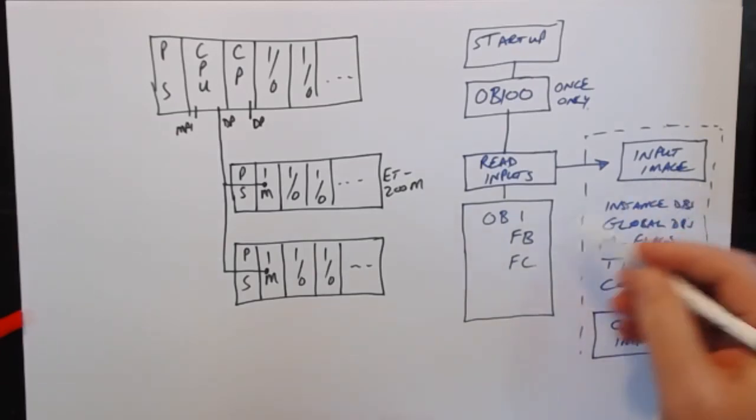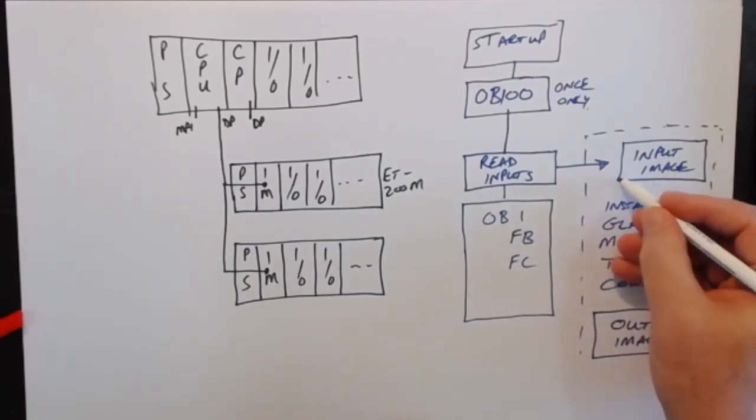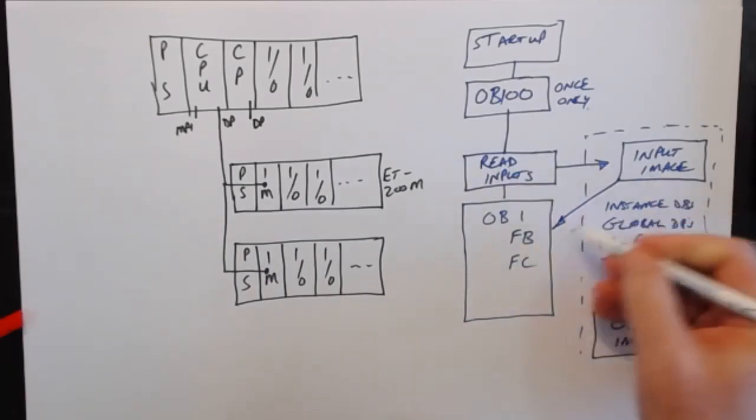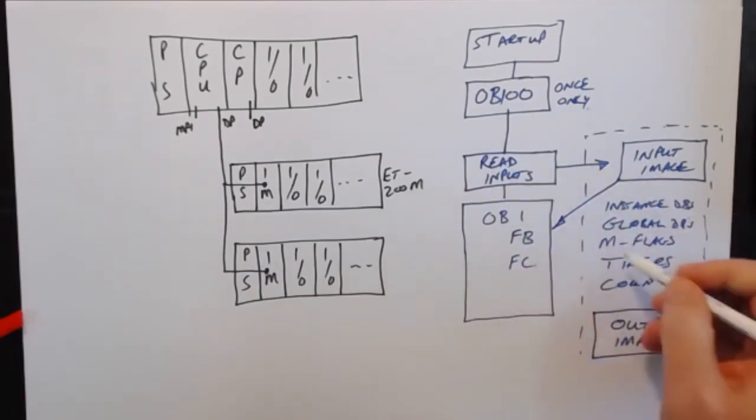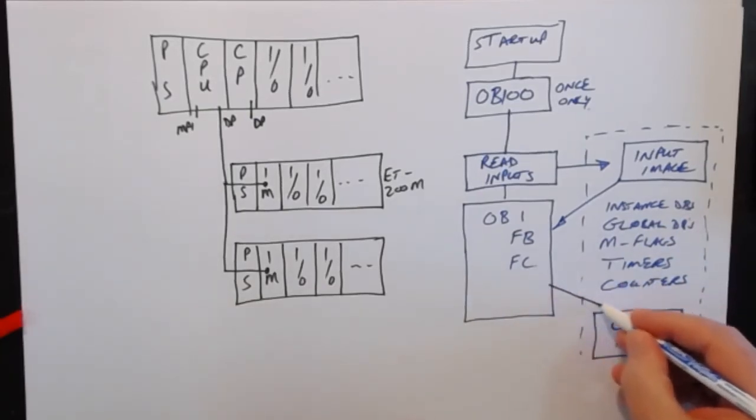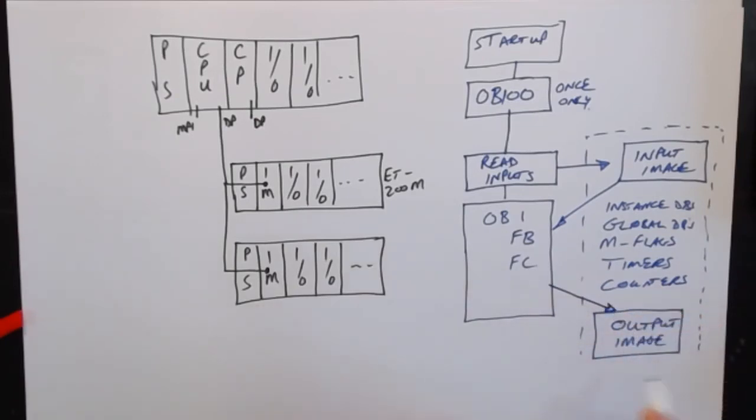When your program is running, it's taking information from the inputs. It doesn't read directly from the hardware, it reads from the input image. It operates on all that to create your program state, and then from that it writes and modifies the output image.